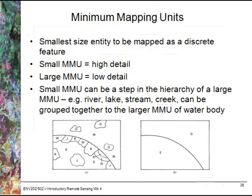Image analysis is also controlled by the minimum mapping unit required for a particular application. A small minimum mapping unit means high detail, and a large minimum mapping unit means low detail. For example, low detail might just be land versus water, whereas high detail can get into much more specific information, such as individual species of trees.